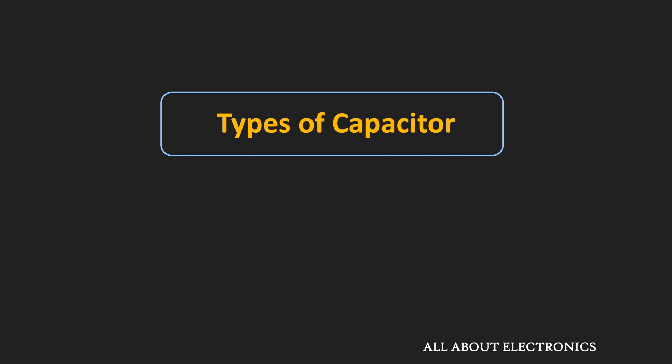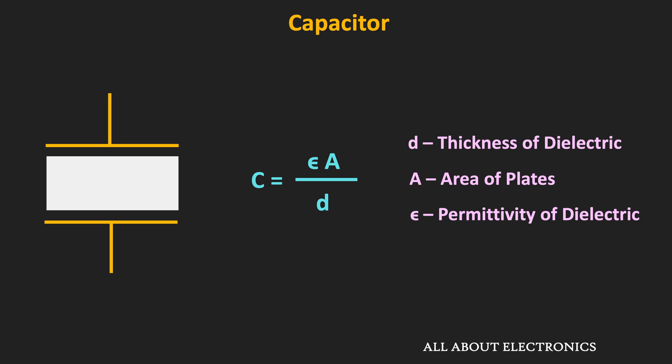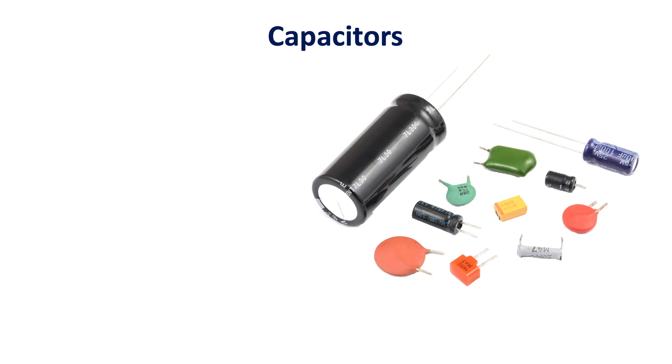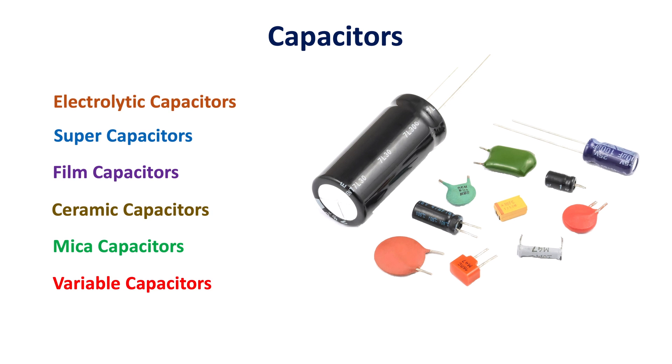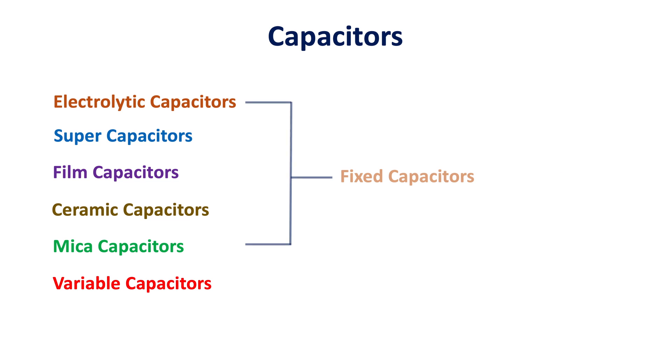Hey friends, welcome to the YouTube channel All About Electronics. In this video, we will learn about the different types of capacitors which are commonly used in electrical and electronic applications. Depending on the type of dielectric material and the construction of the capacitor, there are various types. These capacitors are broadly classified in two categories: the fixed capacitor and the variable capacitor.